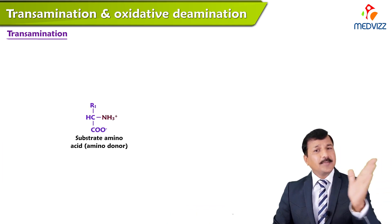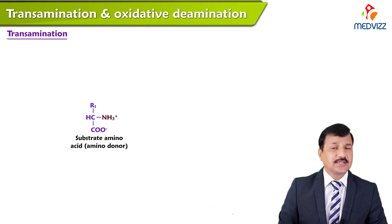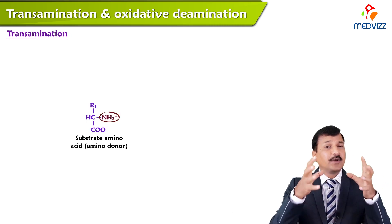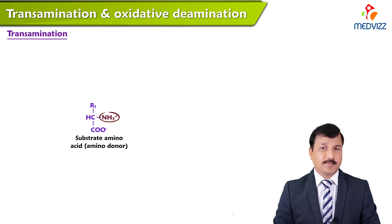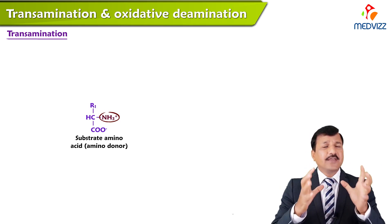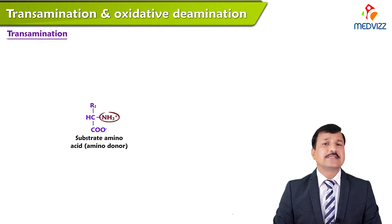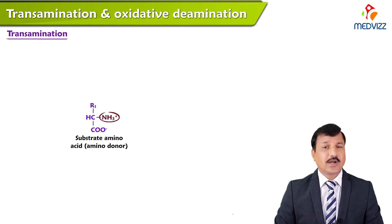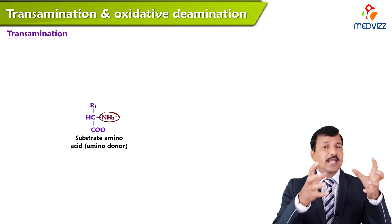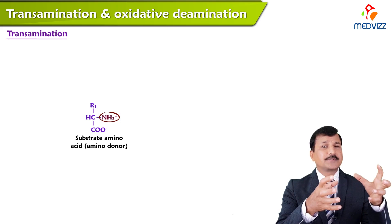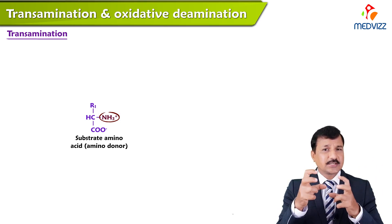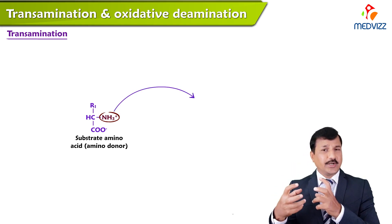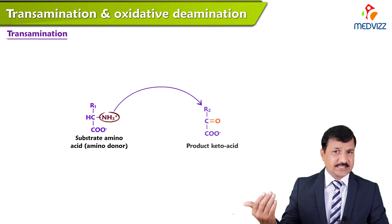The carbon skeleton goes for energy generation, whereas the amino group has to be transported. Safe transport of the amino group is the transamination process. In transamination, the alpha-carbon primary amino group is transported to an alpha-keto acid.